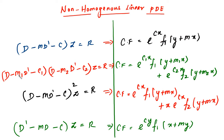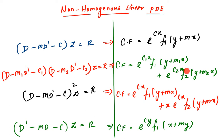Suppose two different factors are coming. You have to apply this formula. From these two different factors, try to identify m1, c1 and m2, c2. By using m1, m2, c1, c2, try to write the complementary function like this.